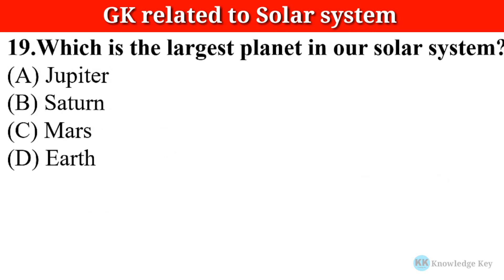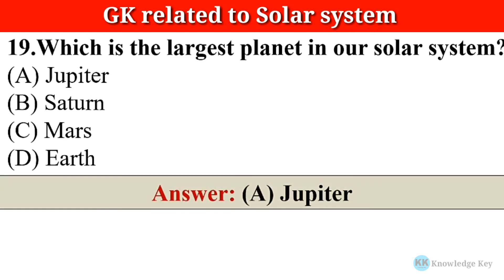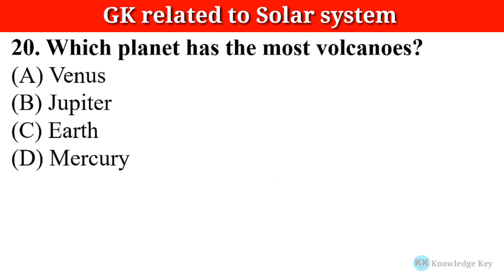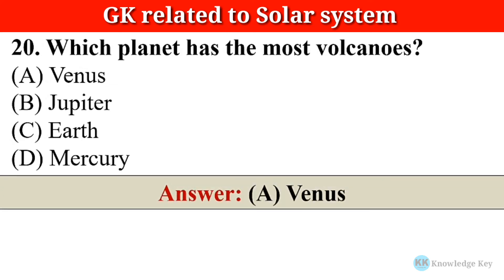Question number nineteen: Which is the largest planet in our solar system? The correct answer is option A — Jupiter. Question number twenty: Which planet has the most volcanoes? The correct answer is option A — Venus.